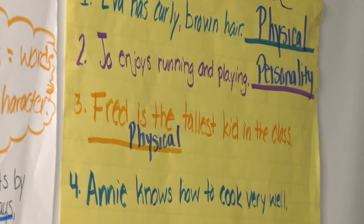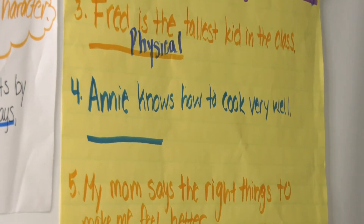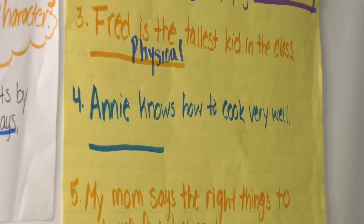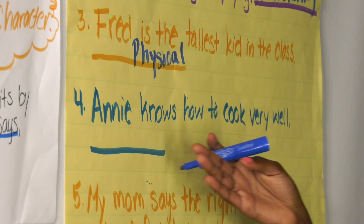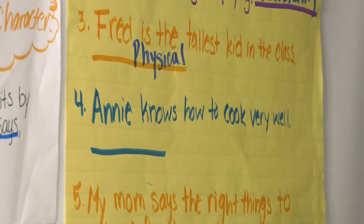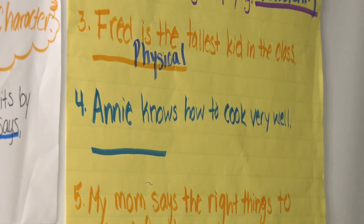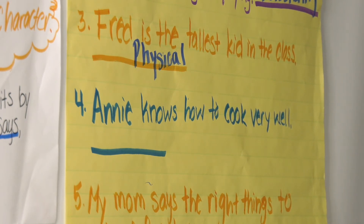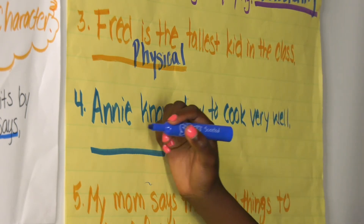Number four: Annie knows how to cook very well. Is that something that if we see Annie, we would know right away just by how she looks? No — she would have to do something to show us that she knows how to cook. In other words, she would have to cook us a nice, yummy meal. So that would be a personality trait.